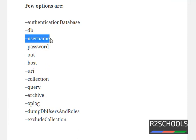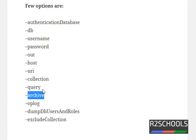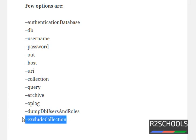Username is the name of the user, password is the user password, and out is the path to store backup files. Host is used to provide the host name. URI is the connection string. Collection means if you want to take a particular collection backup, provide the collection name. Query accepts a JSON query. Archive, oplog, dump users and roles are also available as parameters. If you want all collections except a few, use the exclude-collection option.